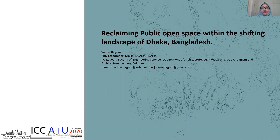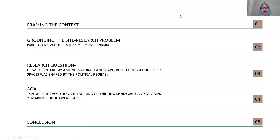My PhD research is about the future of the landscape of Dhaka, and this presentation is part of the research progress. In this presentation, I'm going to talk about the interplay between the natural landscape, public space, and the built environment within the constant transformation of the landscape. The presentation has five sections covering context at a larger scale, the major problem, the research question, the goal, and the conclusion.